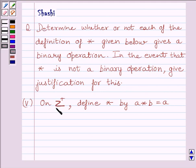The fifth part is: on Z+, where Z+ is the set of positive integers, define star by A star B equals A.